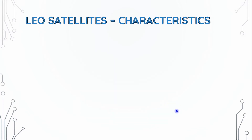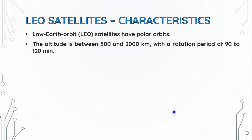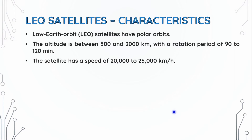LEO satellite characteristics: LEO satellites have polar orbits. The altitude is between 500 to 2,000 km. The rotation period is about 90 to 120 minutes, and the speed is about 25,000 km per hour.